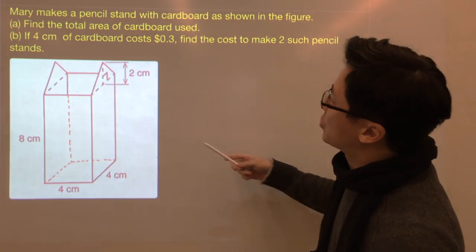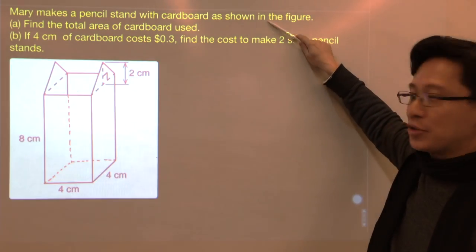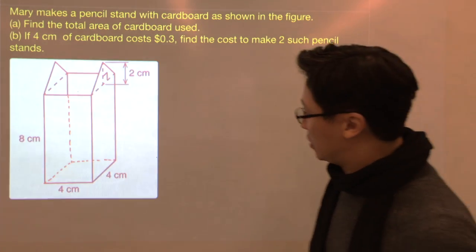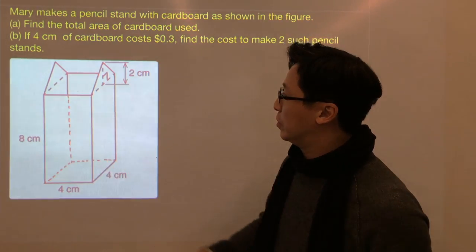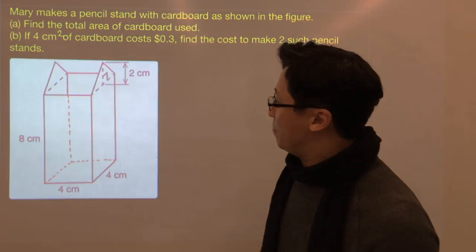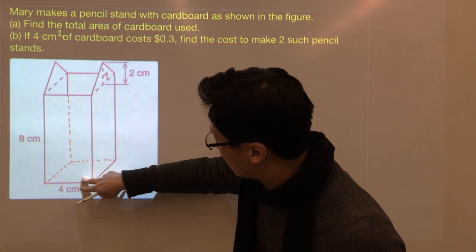Now let's look at the last example in this chapter. Mary makes a pencil stand with cardboard as shown. Find the total area of the cardboard used. That means we have to find the total surface area. So this is not exactly like a prism. This space is open and we have a base here.